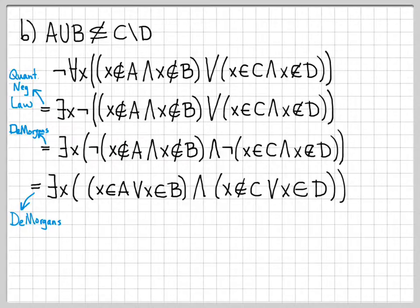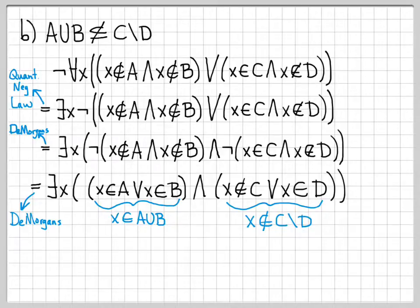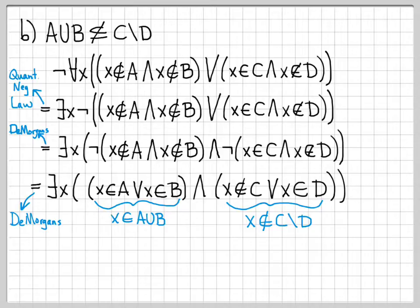Look at what this new expression says: there exists an x that is in A union B and is not in C difference D. That is the logically equivalent statement — which aligns with the definition of not being a subset. If you can find some x that's in A union B but not in C difference D, then A union B can't be a subset of C difference D. That's practice of how you can manipulate set expressions, swapping unions, subsets, and differences for logical quantifiers like there exists and for all, along with logical symbols like or and and.